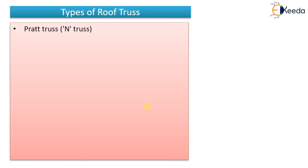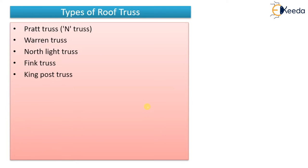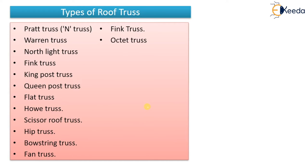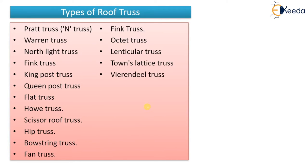I will also show you the diagrams, because in an exam if types of roof trusses are asked, you should also be able to draw the diagrams. The types are: Pratt truss (also known as N-truss), Warren truss, North light truss, Sphinx truss, King post truss, Queen post truss, Flat truss, Howe truss, Scissor roof truss, Hip truss, Bowstring truss, Fan truss, Fink truss, Octet truss, Lenticular truss, Town's lattice truss, and Vierendeel truss.